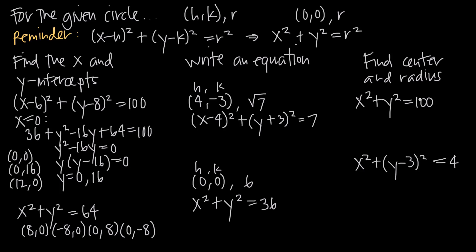When we're given the equation of a circle and want to find its center and radius, we match it to one of our standard forms. For x squared plus y squared equals 100, we know the center is at the origin (0, 0). To find the radius, we take the square root of the right-hand side: the square root of 100 is 10. So the center is (0, 0) and the radius is 10.